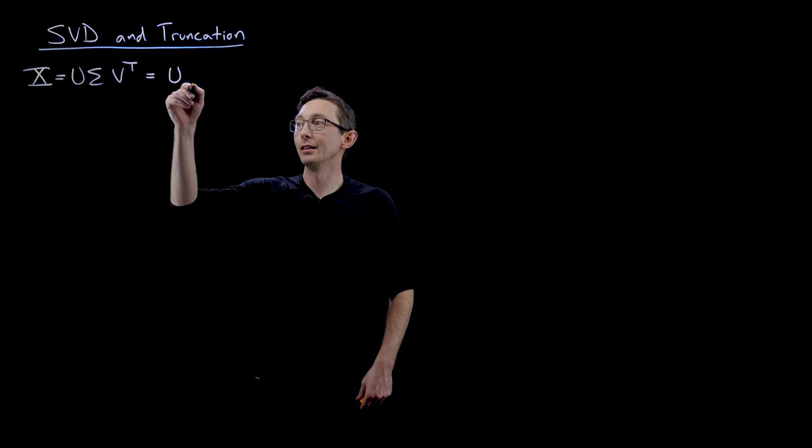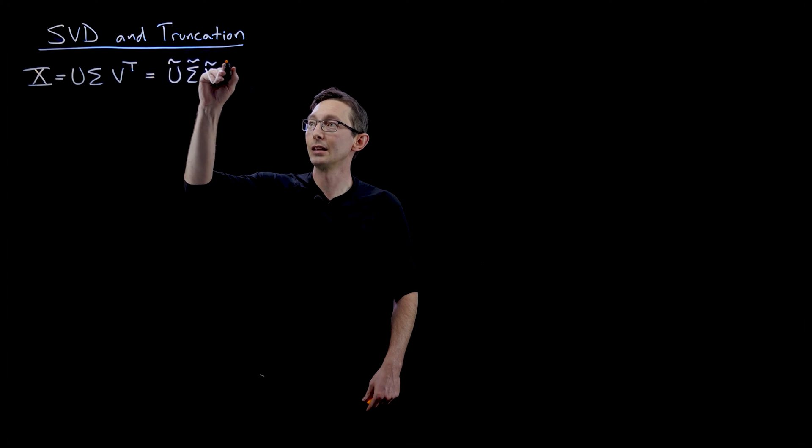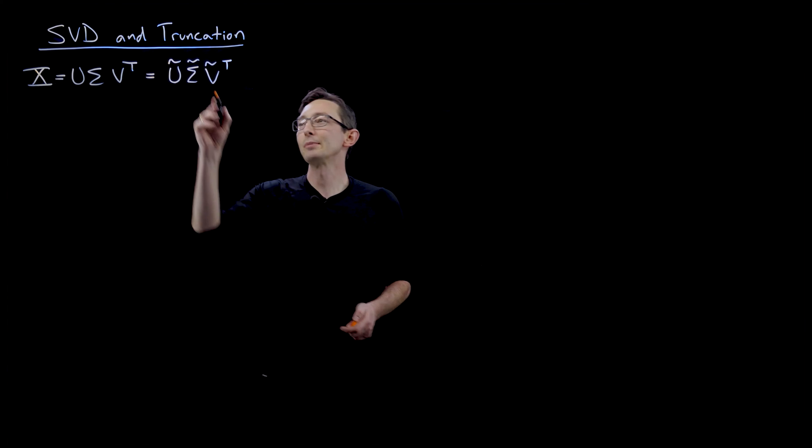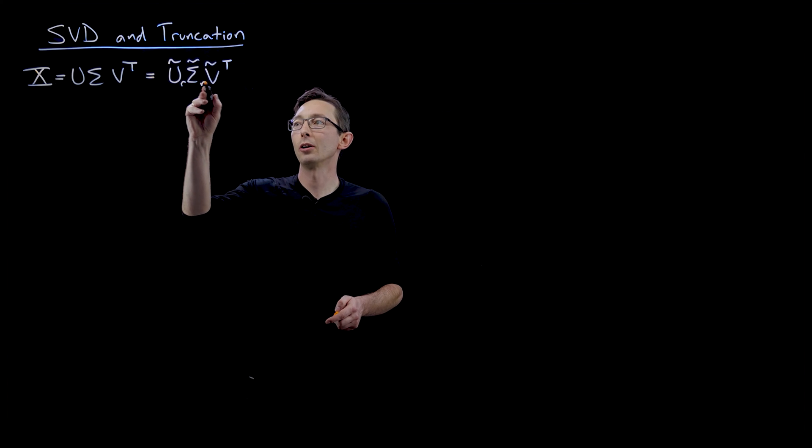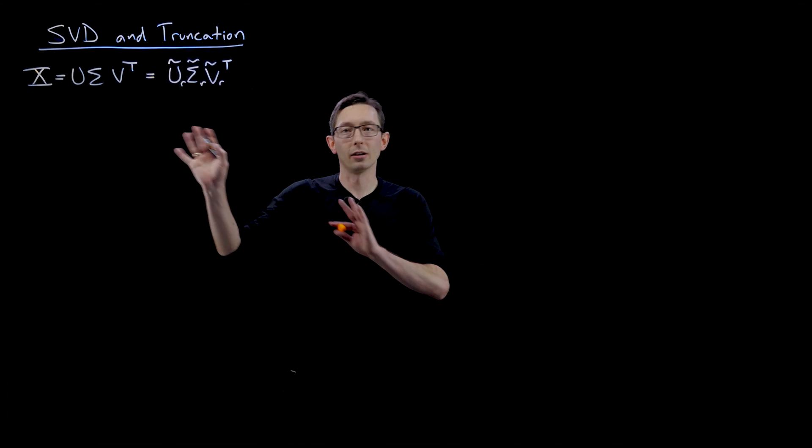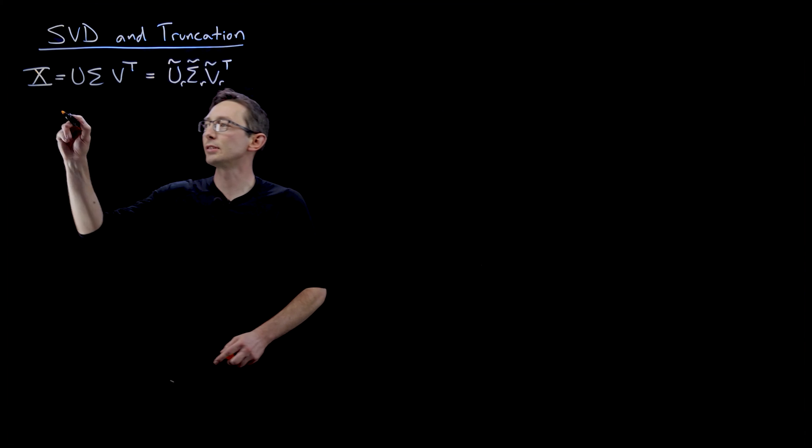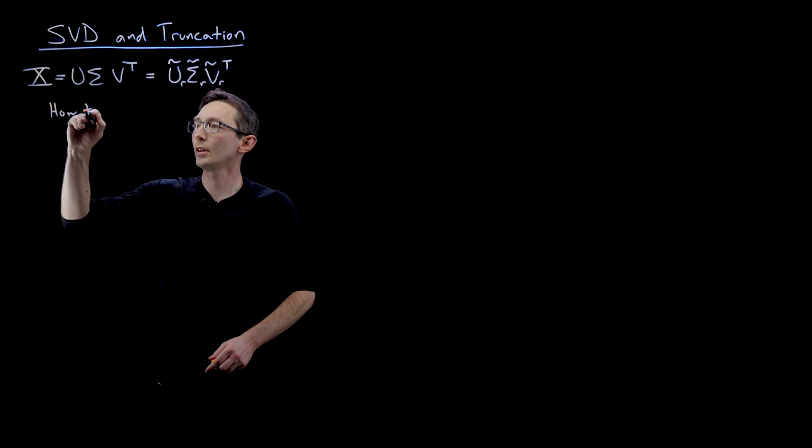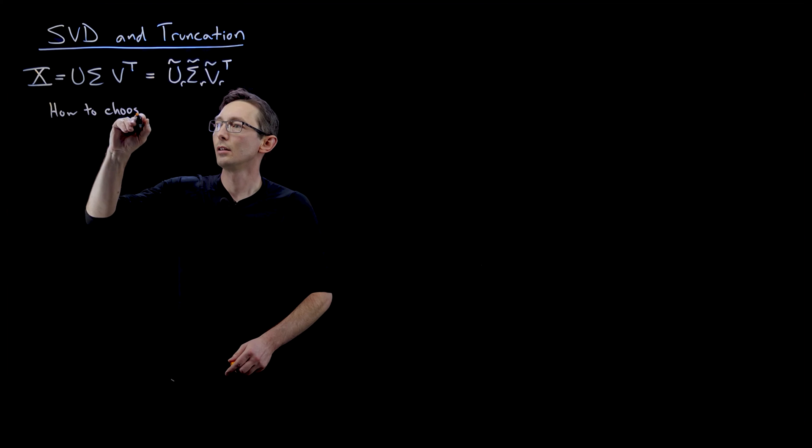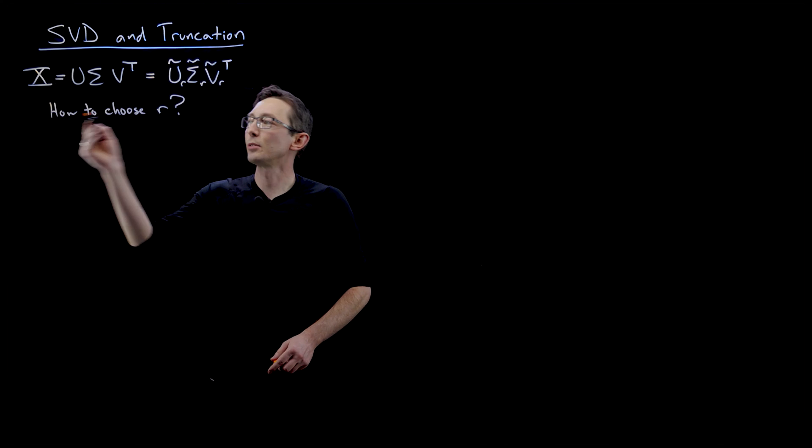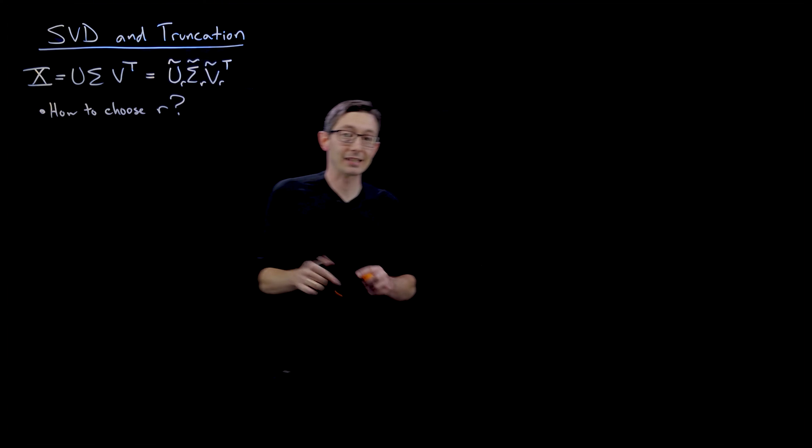Sometimes I denote this with a little subscript r to denote that it's rank r. You either use tildes or r's. But how do you choose? So how to choose r? This is one of the most fundamental questions in the SVD.